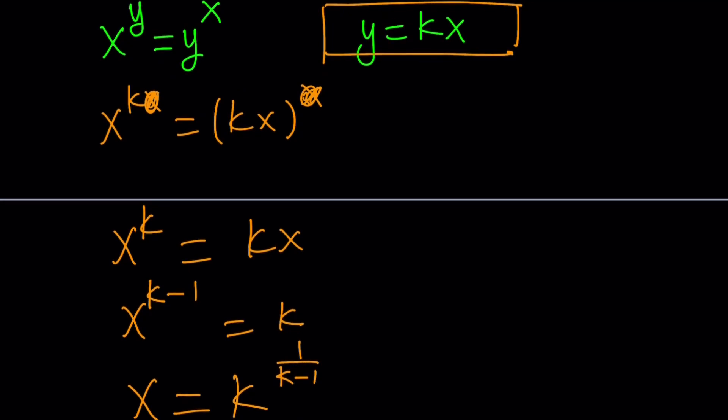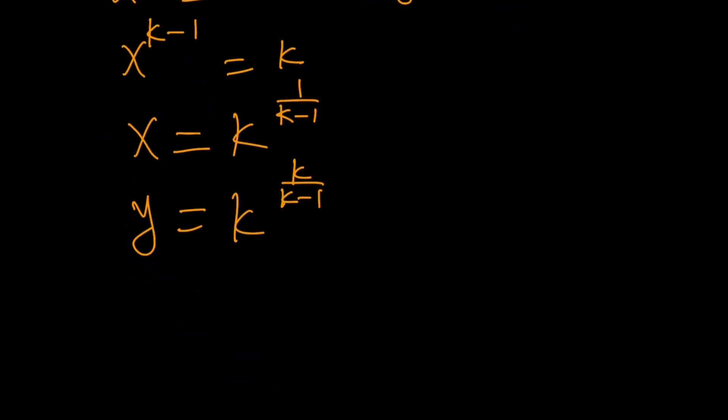Because kx is the same as x to the k, therefore, y is going to be the same as x to the k. Make sense? Okay, great. So we kind of parameterize the solution, meaning that if you change the values of k, you're going to get infinitely many values.